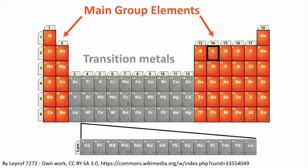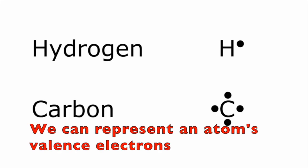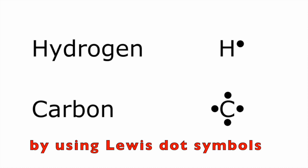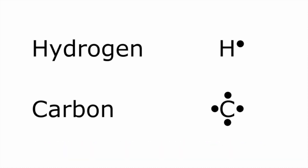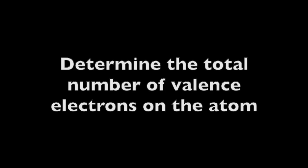Now let's talk about Lewis dot symbols. We can represent an atom's valence electrons by using Lewis dot symbols, and these consist of the symbol for the element surrounded by dots. Each dot represents an electron, and the Lewis dot diagram represents the number of valence electrons that a particular element has. In order to make a Lewis dot diagram, do this: first, determine the total number of valence electrons on the atom.